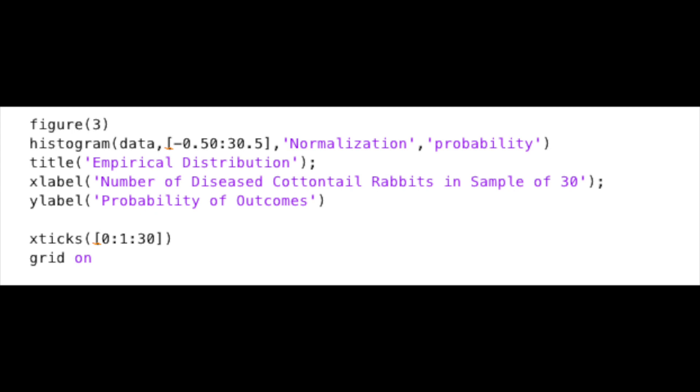In the histogram command itself, we have to supply an option and value pair of optional arguments. This will occur after the inputs data and the edges for our bins. We'll supply the option of normalization and the corresponding value of probability.